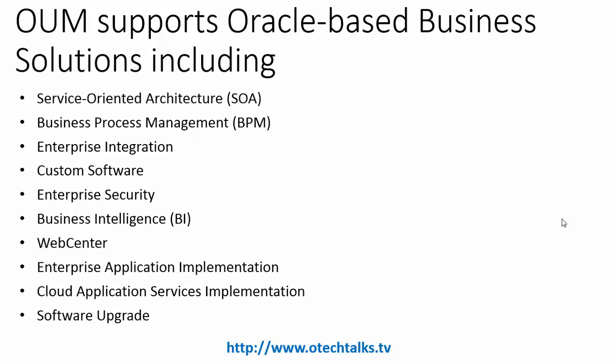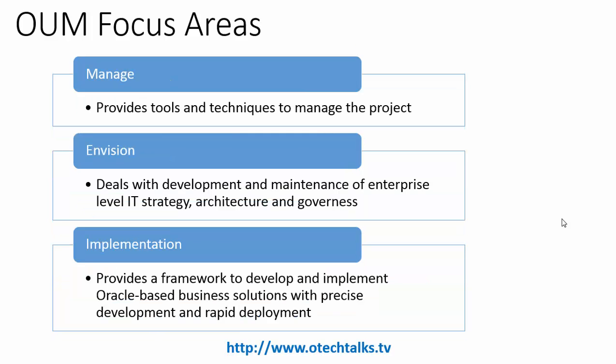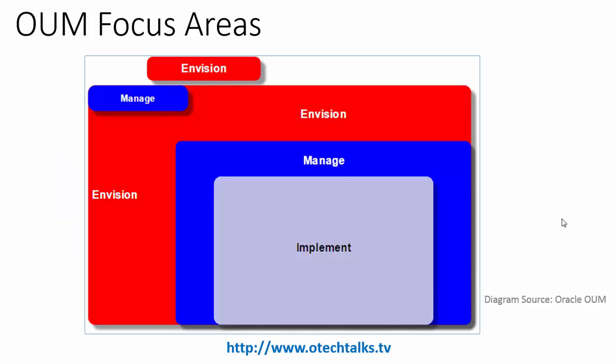OUM has three primary focus areas: Manage, Innovate, and Implement. Manage provides tools and techniques to manage the project. Innovate deals with development and maintenance of enterprise-level IT strategy, including architecture and governance. Implement provides a framework to develop and implement Oracle-based solutions on any product line, including rapid deployment based on business accelerators.